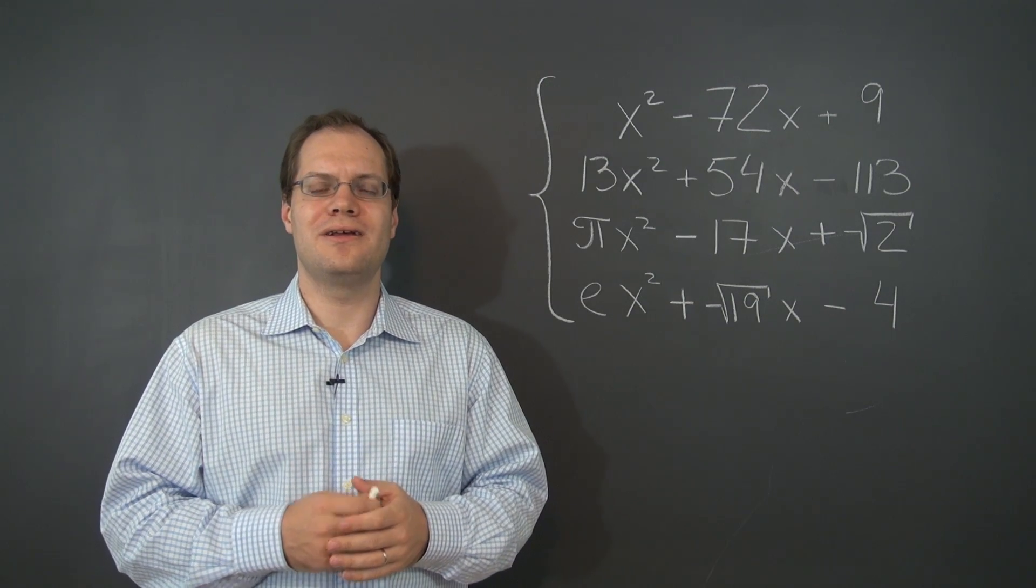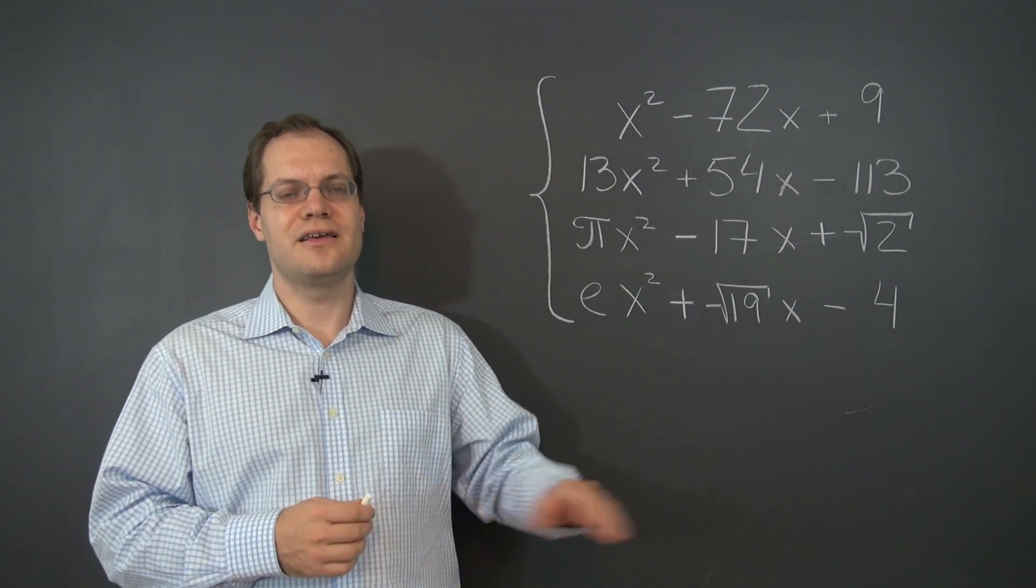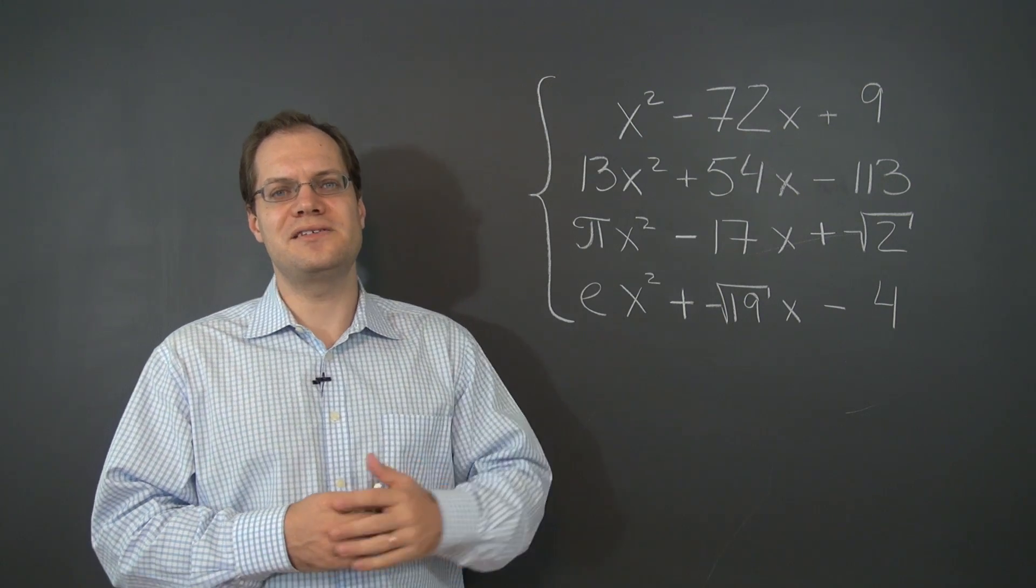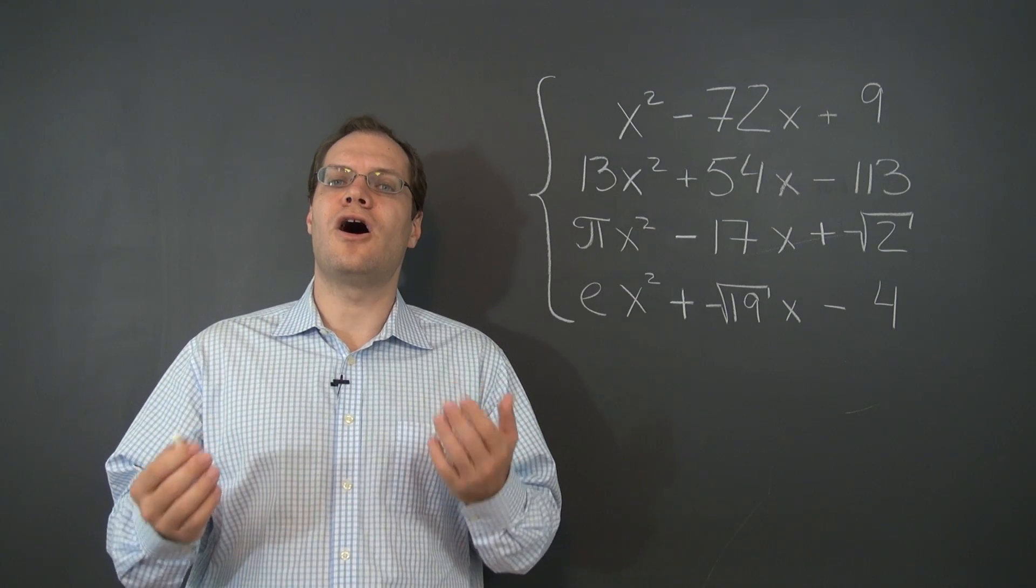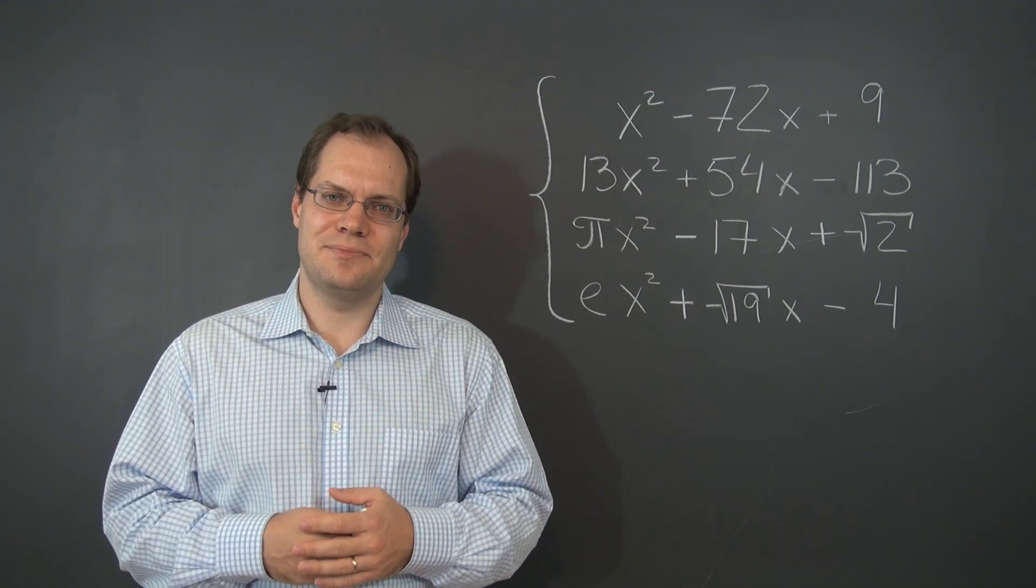Take a look at the four polynomials on the board and answer the following question. Can one of these polynomials be expressed as a linear combination of the rest? In other words, are these polynomials linearly dependent?